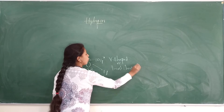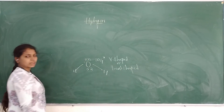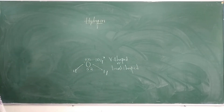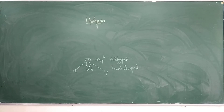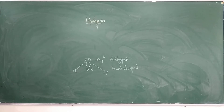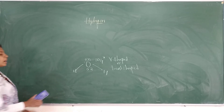The bond length present between oxygen and hydrogen — what is the bond length present between oxygen and hydrogen? It is 95.7 picometers.